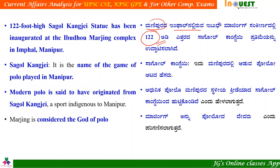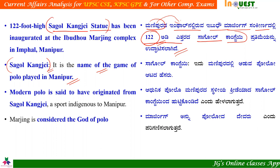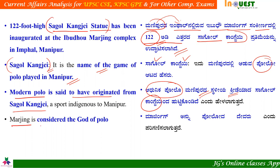The statue is named after the game of polo played in Manipur. Modern polo is said to have originated from Saagul Kaijai in Manipur.